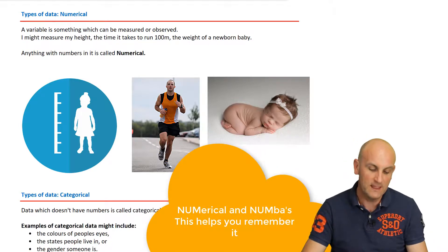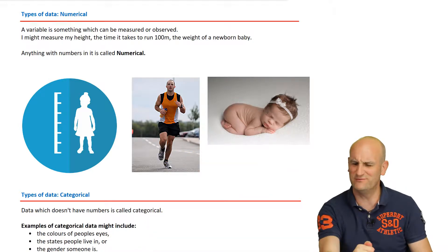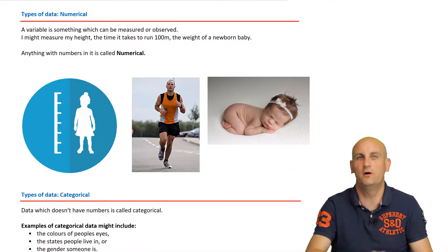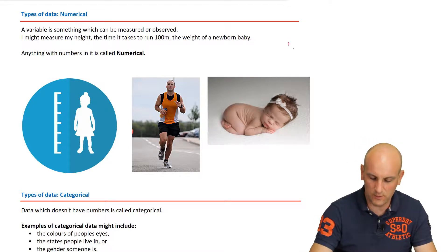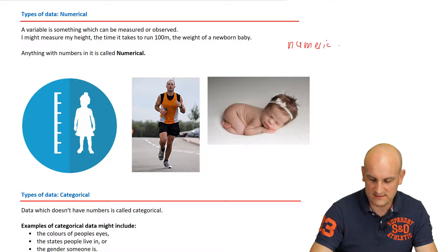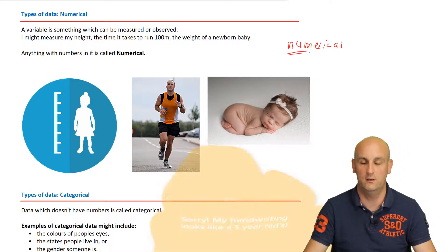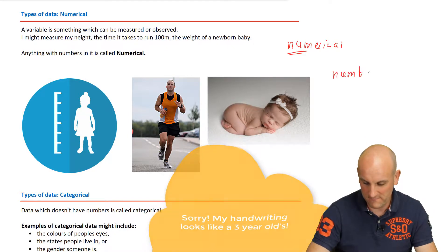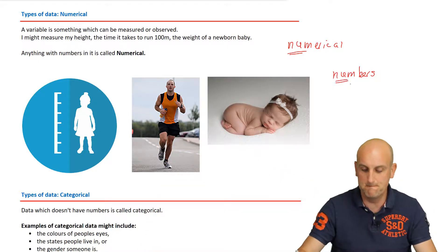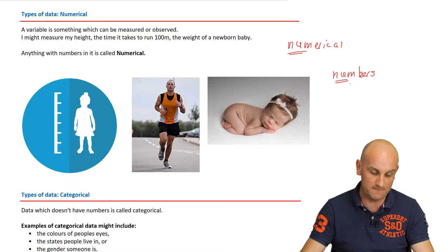Numerical data is something that can be measured, counted, or observed. Now, lots of people ask how do you remember that? Well, let's look at the word: N-U-M-E-R-I-C-A-L. What are the first three letters of numerical? Num. And look at this word here: N-U-M-B-E-R-S, numbers. So numerical and numbers start with the same thing.